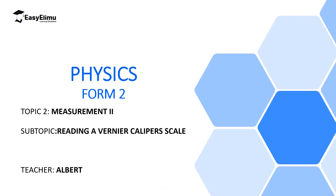Welcome to ECLIMU, learning simplified. Welcome to this lesson. In the previous lesson we discussed an instrument called Vernier calipers — the parts of Vernier calipers, how to use them to measure objects. We said it is appropriate for measuring the internal and external diameters of hollow substances, spherical objects, and we also discussed the least count or accuracy of this instrument.